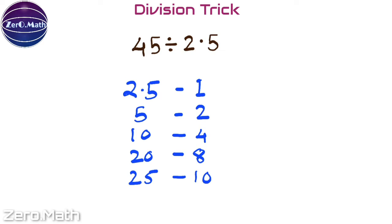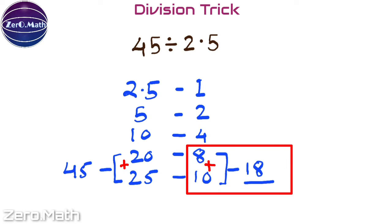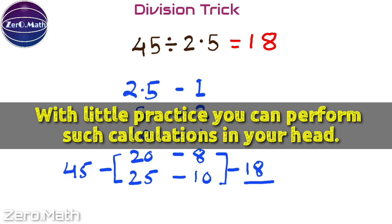Now, what we need to figure out is the sum of which numbers on the left-hand side equals 45. You can see that 20 plus 25 equals 45, which means the sum of 8 and 10, which equals 18, is our answer. If you can calculate the unit values in your head, which is definitely possible with a little practice, you can perform such calculations mentally.